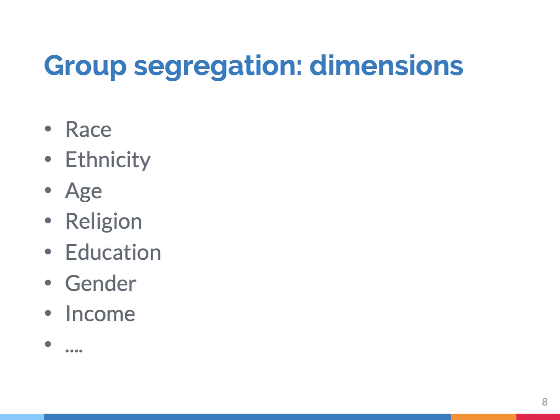In this example we focused on race, but there are many groups, of course, not just racial groups. For example, we could study the degree of segregation between ethnic groups in society, or age, religion, education, gender, income, and so on. This means that if we find there is no segregation with respect to, for example, age, it could be that there is still a lot of segregation in terms of another dimension, such as gender.